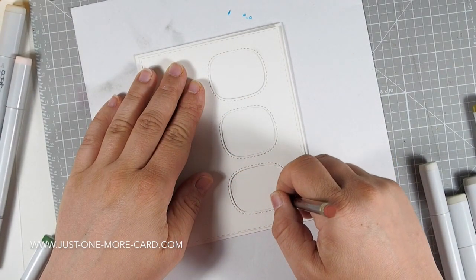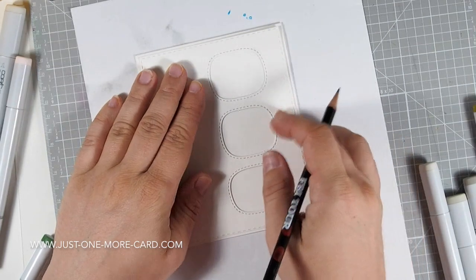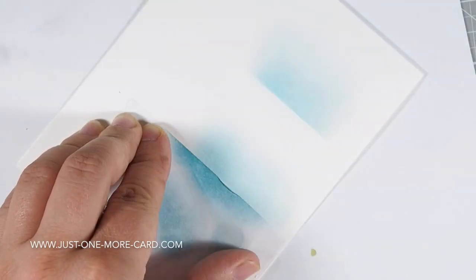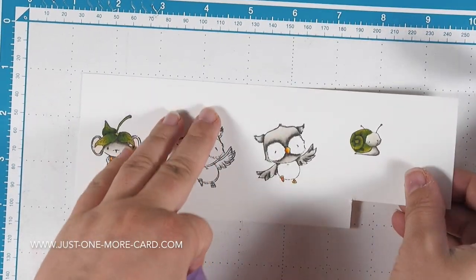I put this panel on top of my card base and I'm just tracing the shapes here with my pencil so I'll know where they are because I want to do some distress inking here. And I'm using a piece of paper to make sure that my fingers don't smudge the color and that I don't go too far down. And I'm just adding a hint of blue here. I want to have a hint of the sky behind the critters but not too much.